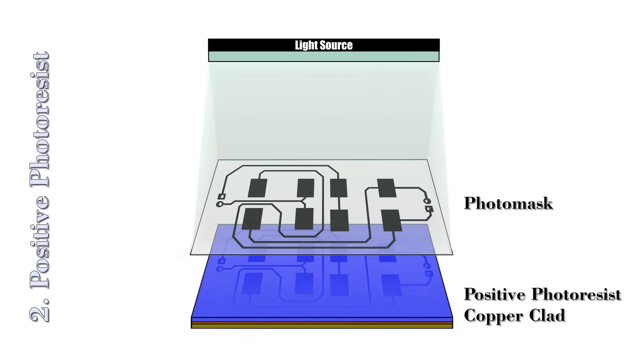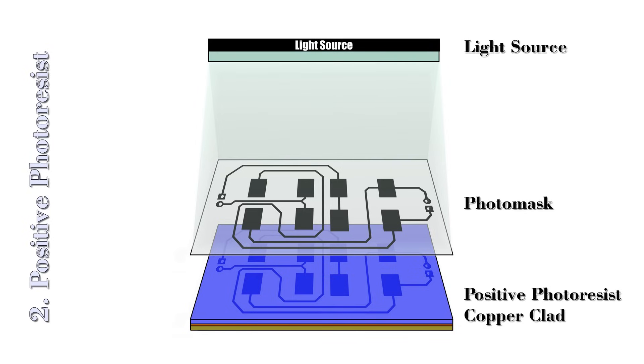In the picture, you can see that the dark blue color is the hardened photoresist and the remaining area is the softened photoresist. The softened photoresist will be removed in the later stage of PCB manufacturing.